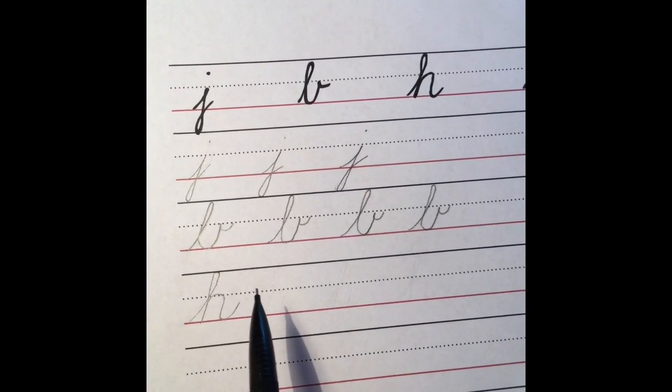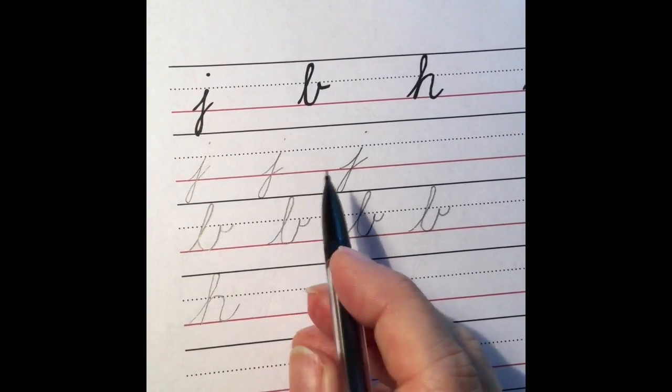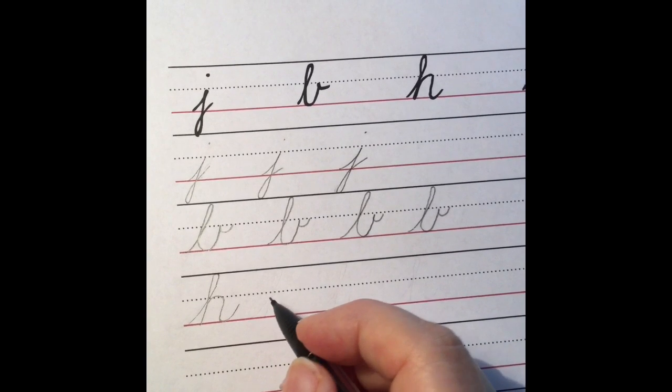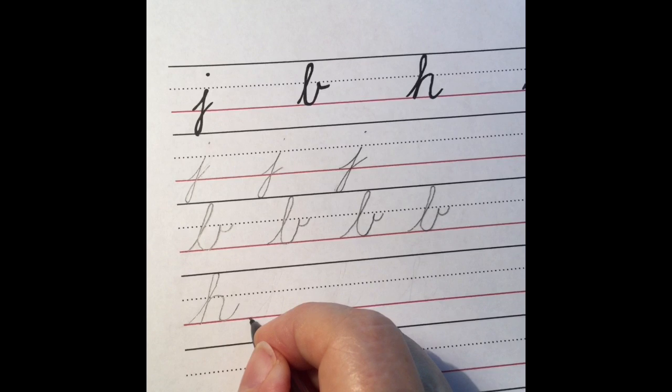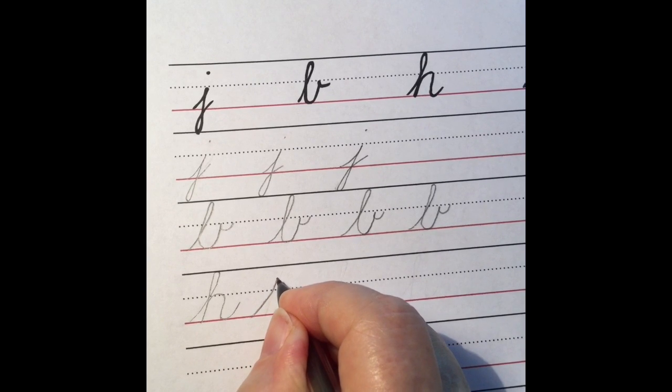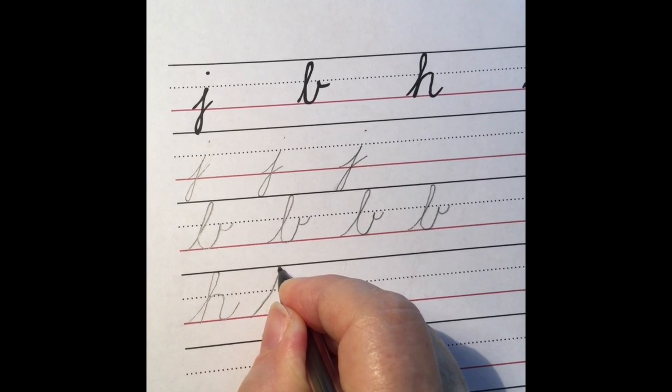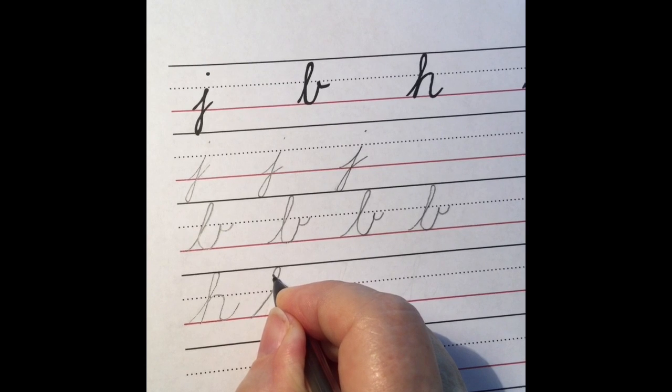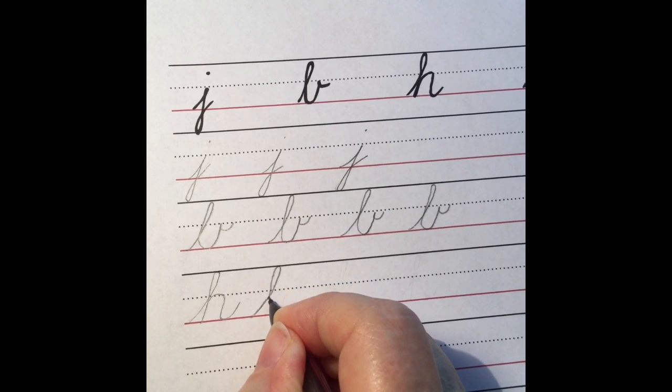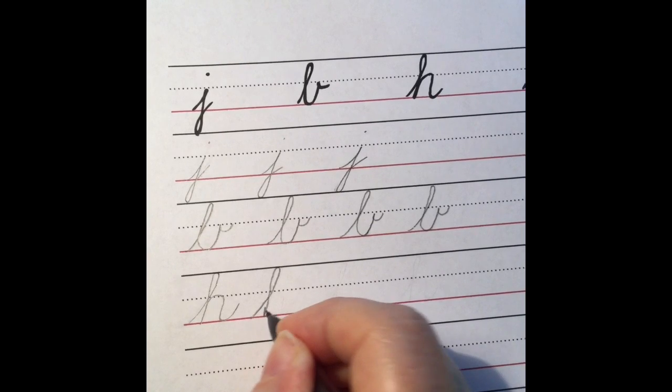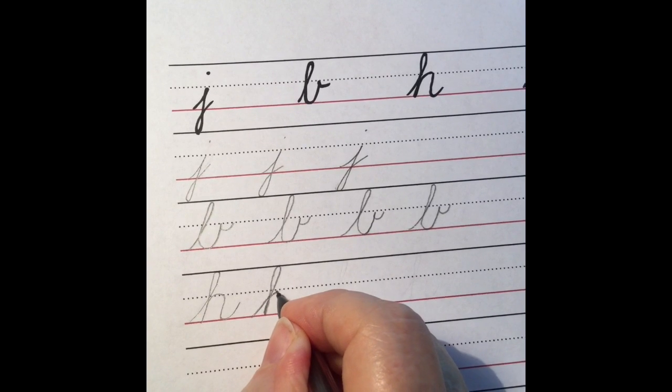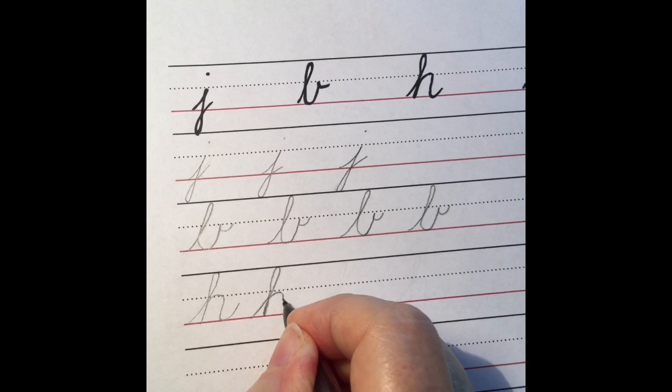The next two-space undercurve letter is h. An h is made with a beginning like an l, a tall undercurve that goes up to the headline, curves slightly back to the left, and has a slant line straight down. Then we trace up that slant line with an overcurve, touch the midline, slant down to an undercurve.